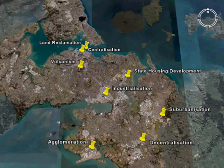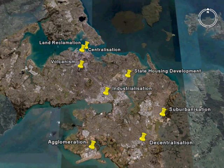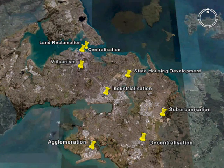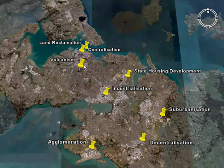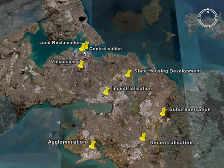Hey team, this mini lesson is looking at urban processes, and we'll have a look at Greater Auckland and see what processes are happening in the city. First of all, we're going to zoom in near the middle and check out the process of centralisation.